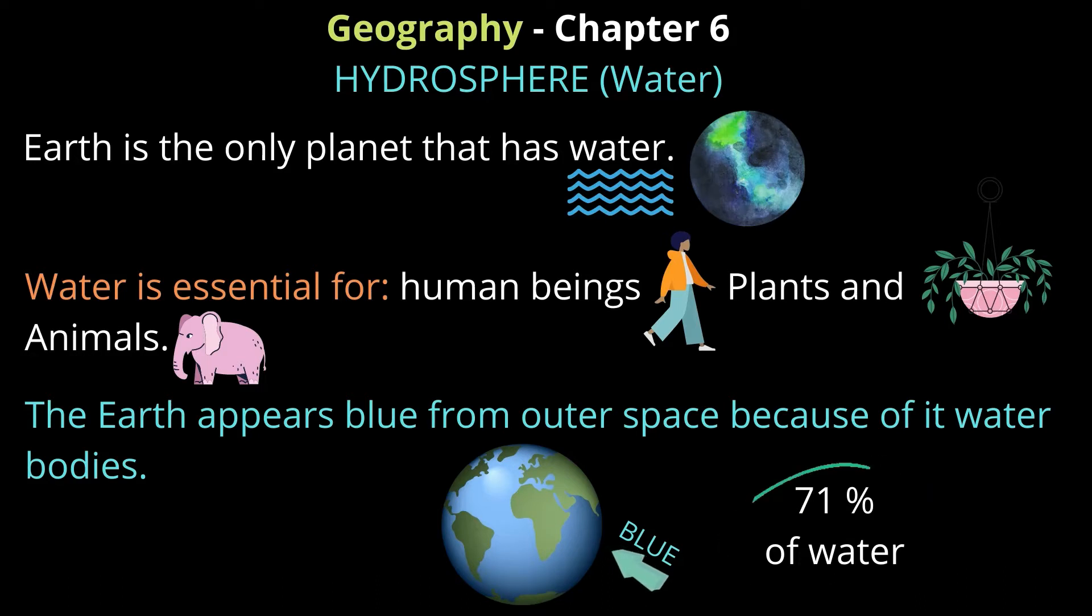Human beings need water, and animals - elephants, cats, dogs, all the animals - need water. Why is water important? Because water is important for life. Because Earth has water on it, it's the only planet that has life on it. It is able to sustain life.